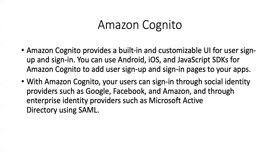Cognito provides a built-in customizable UI for user sign-up and sign-in. You can specify that a user must change their password after first signing in. You can also use Android, iOS, and JavaScript SDKs to add your own customizable pages. A user can sign in through social identity providers such as Google, Facebook, and Amazon, and also through enterprise identity providers such as Active Directory using SAML.